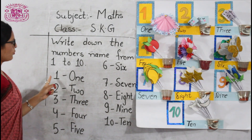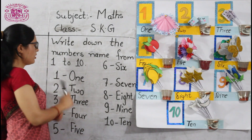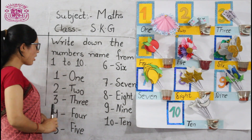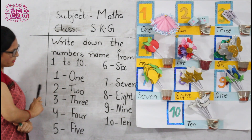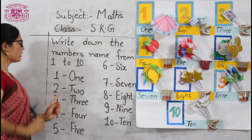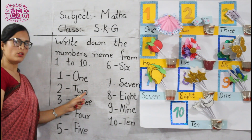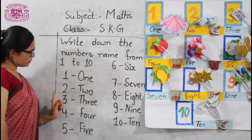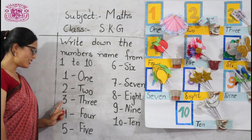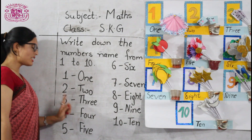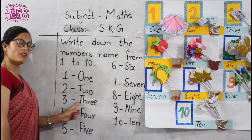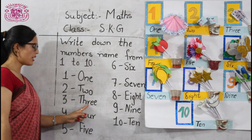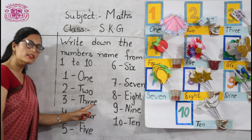Read once again. 1: O-N-E. What comes after 1? 2: T-W-O. What comes after 2? 3. What is the spelling of 3? Very good. T-H-R-E-E, 3.